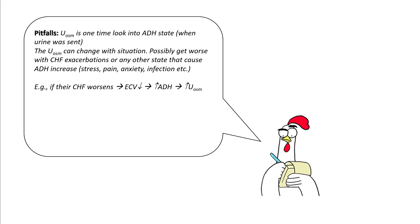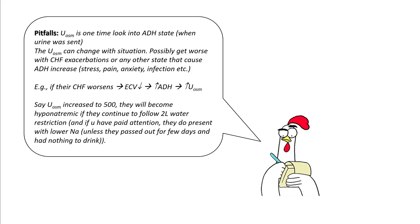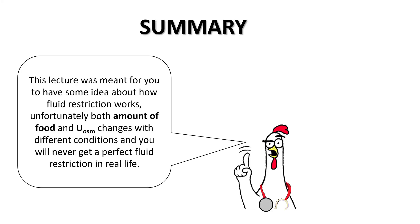Urine osmolality can change with different situations, as ADH can increase with CHF exacerbation and many other factors like stress, pain, anxiety, and infections. This will suddenly increase their ADH and urine osmolality. For example, if urine osmolality increases from 300 to 500, the patient will become hyponatremic if they continue to follow 2 litre water restriction. In all heart failure admissions, these patients do tend to present with lower sodium unless they were altered for the past few days and unable to take in any free water. This lecture was specifically meant to explain how fluid restriction works.